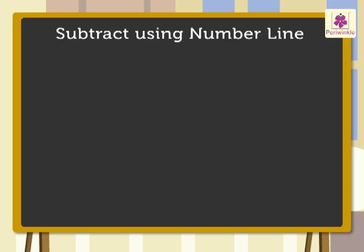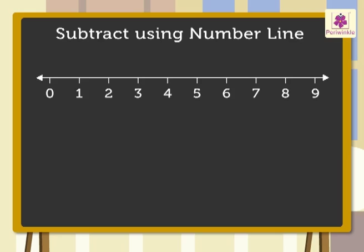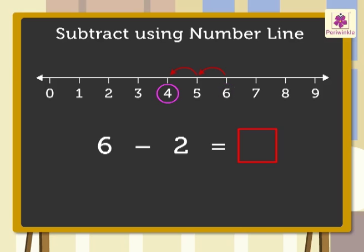Now let's learn how to subtract using a number line. Subtract six minus two using a number line. Draw a circle around the minuend, that is six. Two is the subtrahend, so take two steps to the left of six. The number you reach, which is four, is the difference. So six minus two is four.